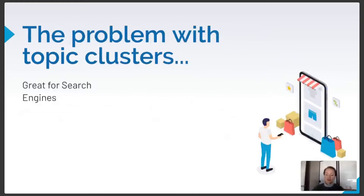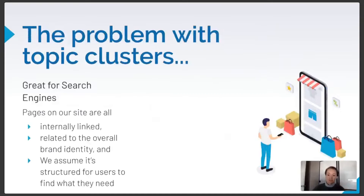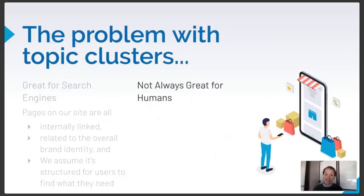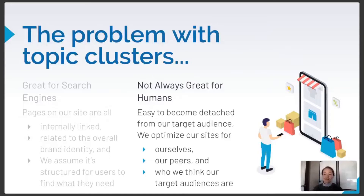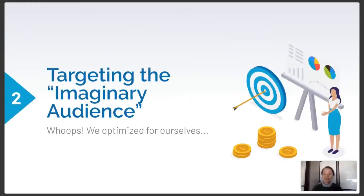This is where the issues start. Topic clusters work really well for search engines because they ensure internal linking and cohesion, but we just assume that structure is also great for users — and that's not always the case. The actual process of navigating a topic cluster isn't always a great experience for real, non-robot humans. As marketers optimizing for search engines, we become detached from our target audiences and end up optimizing for ourselves. This is what Michael Agard calls the 'imaginary audience' — or as I like to say, we optimized for ourselves.